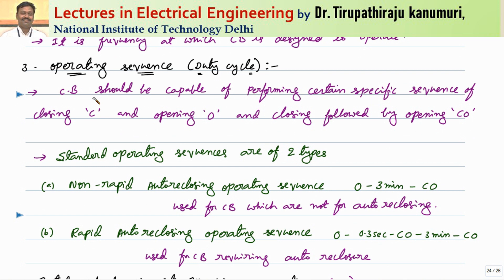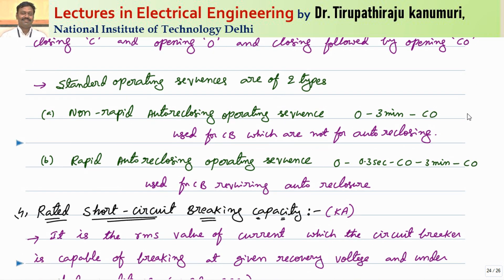Next is the operating sequence. In practice we may or may not use auto reclosing, and this will be specified on the circuit breaker. The circuit breaker must perform specific sequences: closing is represented by C, opening by O, and closing followed by opening by CO. During reclosing, if the circuit breaker closes but the fault is not cleared, it should open immediately — this is the CO sequence.